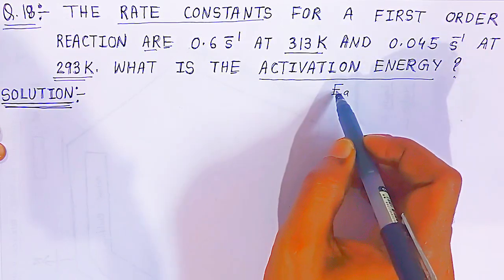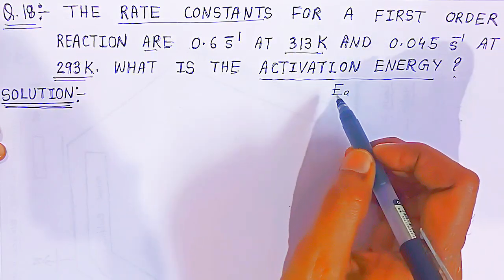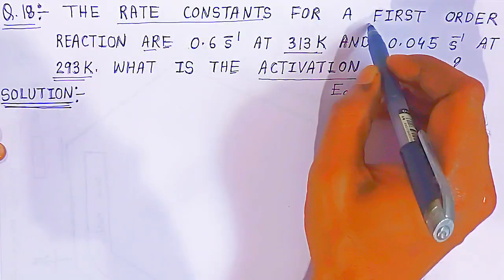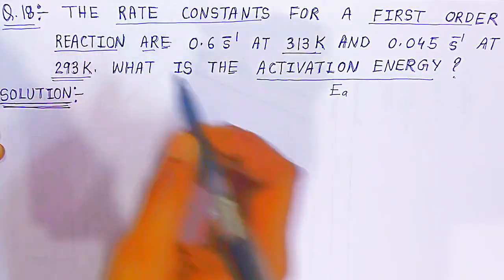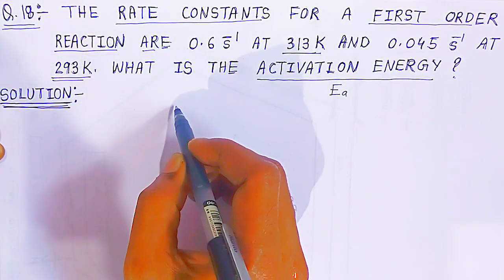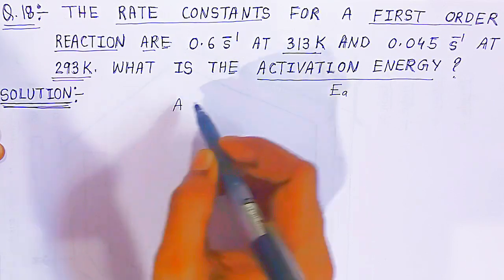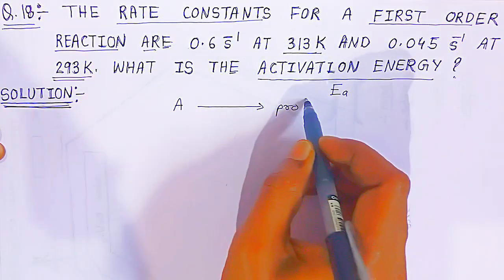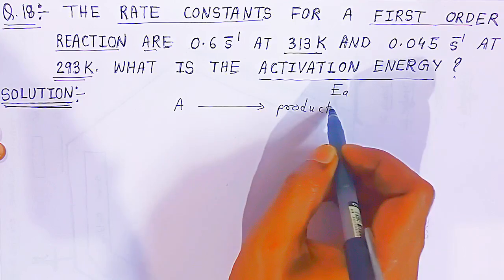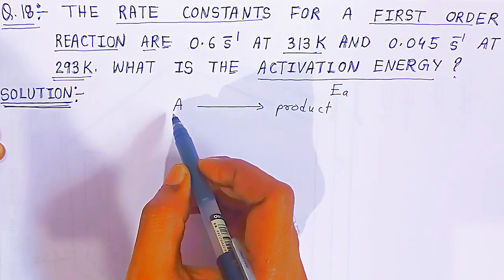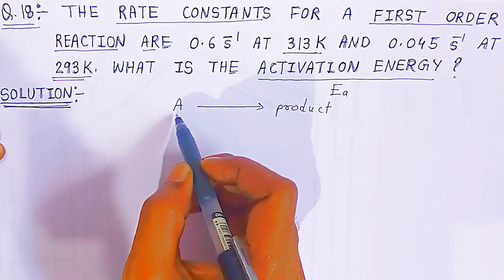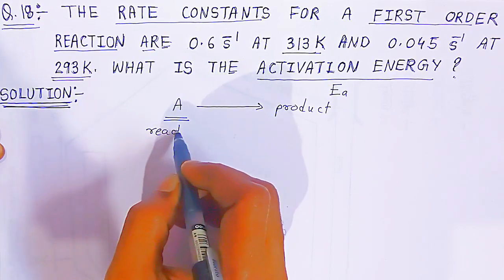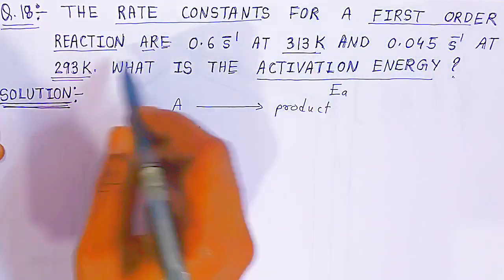E A stands for energy of activation. Since it is a first order reaction, reactant A is going to form the product. The rate is totally dependent on the concentration of only one reactant, that is A. That is why it is called a first order reaction.